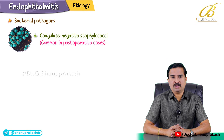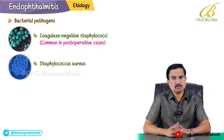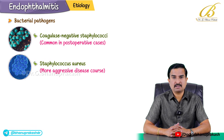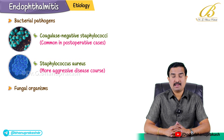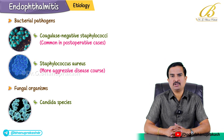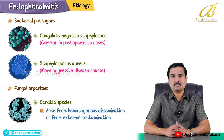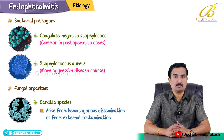Other bacteria, such as Staphylococcus aureus, can also be involved, sometimes leading to a more aggressive disease course. When we speak about fungal organisms, especially Candida species, they lead to a more gradual, chronic presentation and typically arise from hematogenous dissemination or external contamination in immunocompromised individuals.